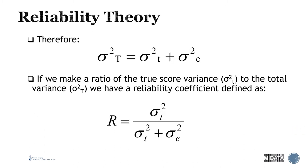The total score variance (σ²) equals the true score variance plus the error score variance. Making a ratio of the true score variance to the total variance gives us the reliability coefficient — that is the basis of measuring reliability.